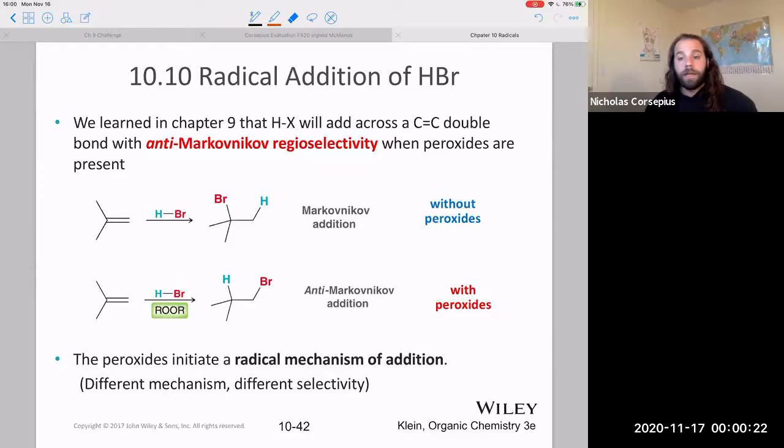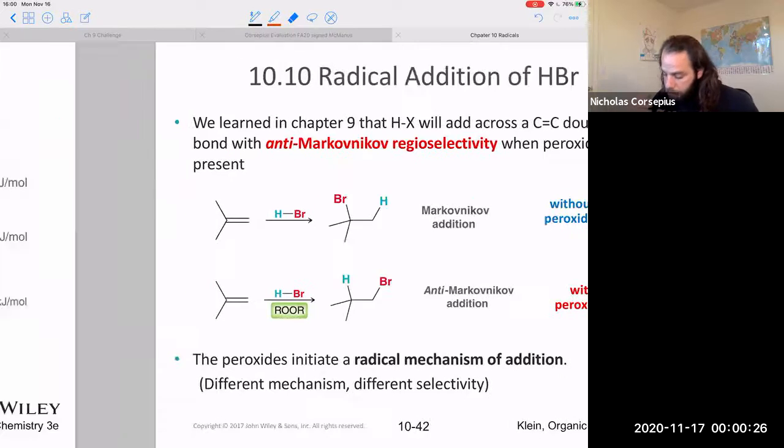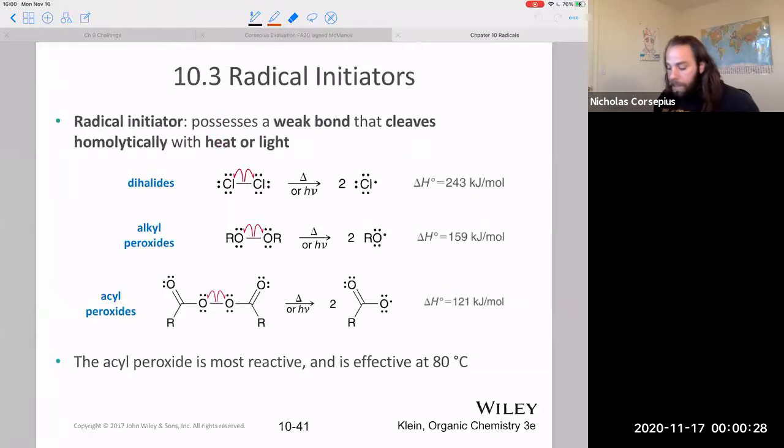And the peroxide is playing a key role here. That's what's making it a radical addition, because peroxide is what we call a radical initiator. So similar to how we can take these dihalides, Cl2, Br2, hit them with light or heat, and they will homolytically cleave.